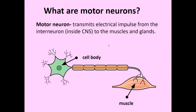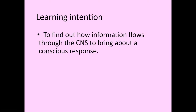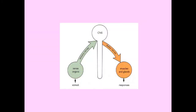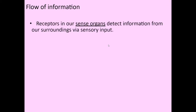So that's us talking about the basic structure of the different types of nerve cells. In the next section, we look at the central nervous system and its ability to bring about a conscious response. The flow of information begins with receptors in our sense organs — we talked about touching the table in front of us and feeling that pressure. They detect information from our surroundings via sensory inputs: sensing something, touching, smelling, hearing.